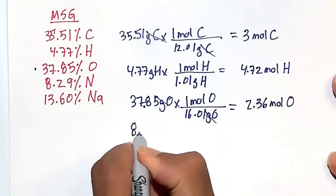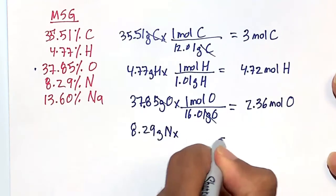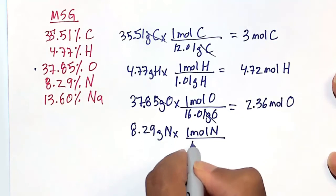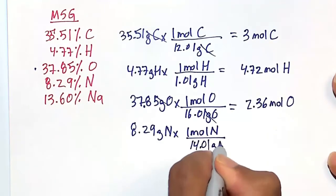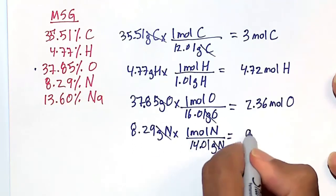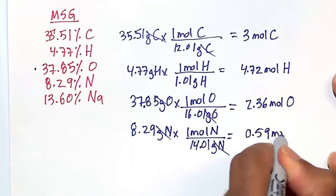8.29 grams of nitrogen, times one mole of nitrogen, has about 14.01 grams of nitrogen. Grams of nitrogen cancel, 0.59 moles of nitrogen.